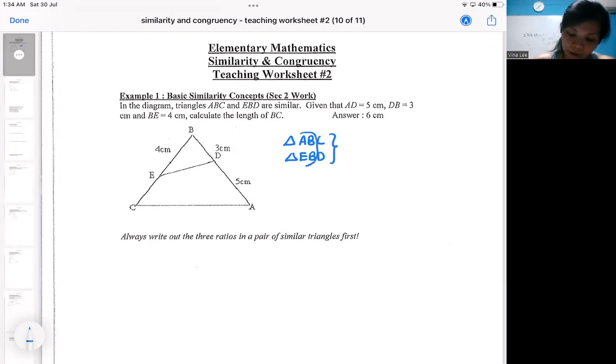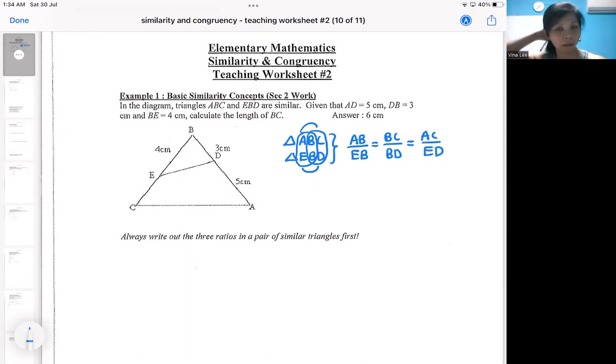You can compare the alphabets. I always compare the alphabet in this way so that I don't make careless mistakes in my ratio. You're still going to be doing this in set three similarity because it's the same concept.